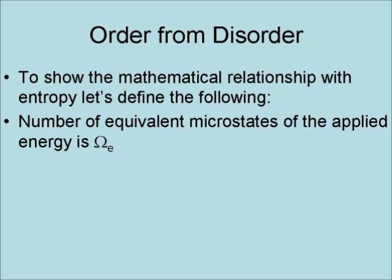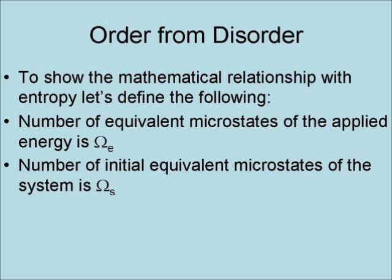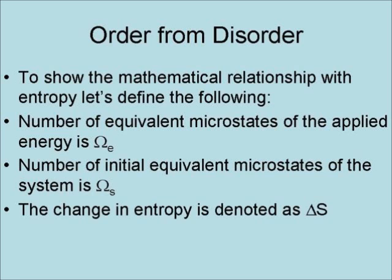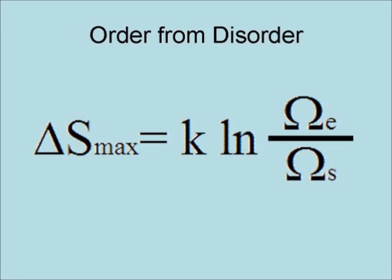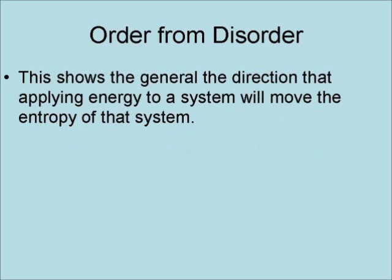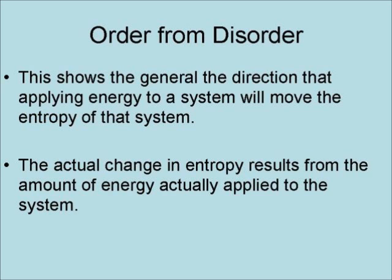To show the mathematical relationship with entropy, let's define the following: the number of equivalent microstates of the applied energy is omega sub e; the number of initial equivalent microstates of the system is omega sub s; the change in entropy is denoted delta S; and K is the Boltzmann constant. This results in delta S max equaling K times the natural logarithm of omega e over omega s. This shows the general direction that applying energy to a system will move the entropy of that system, while the actual change in entropy results from the amount of energy actually applied.